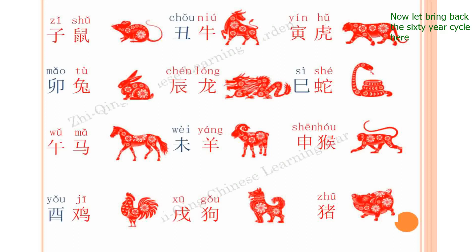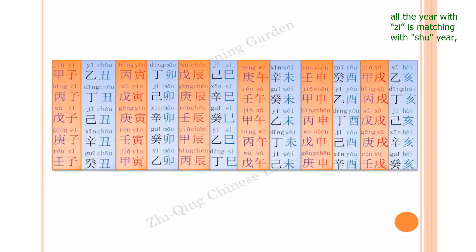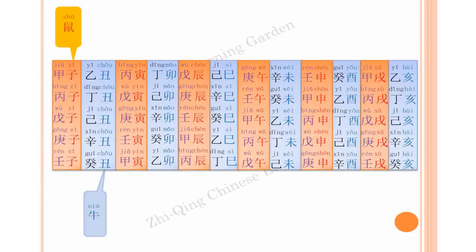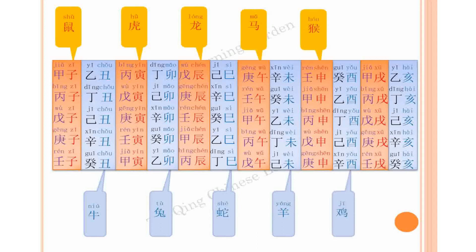Now let's bring back the 60-year cycle. All years with zi match with 鼠 (rat), chou matches with 牛 (ox), yin matches with 虎 (tiger), mao matches with 兔 (rabbit), chen matches with 龙 (dragon), si matches with 蛇 (snake), wu matches with 马 (horse), wei matches with 羊 (goat), shen matches with 猴 (monkey), you matches with 鸡 (rooster), xu matches with 狗 (dog), hai matches with 猪 (pig).